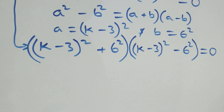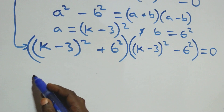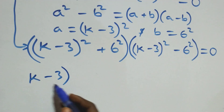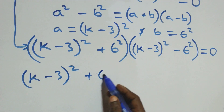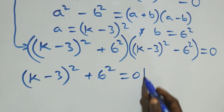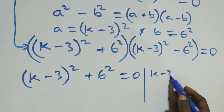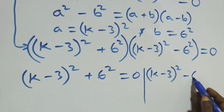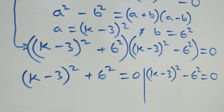We now have two possible cases. The first case: (k minus 3)^2 plus 6^2 equals 0. The second case: (k minus 3)^2 minus 6^2 equals 0.